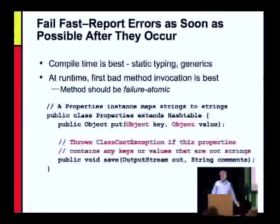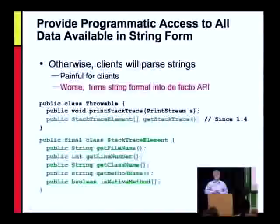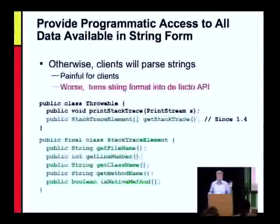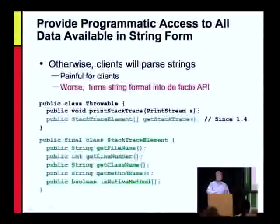You should provide programmatic access to all data that is also available in string form. Whenever you have a method that returns something as a string, you should also have a method that returns the same information in programmatic form. If you don't, clients will have to parse the string — not only is that a pain, but it turns the string into a de facto part of the API. You can never add information to that string because there's code out there parsing it, and if you change the format, you break that code.